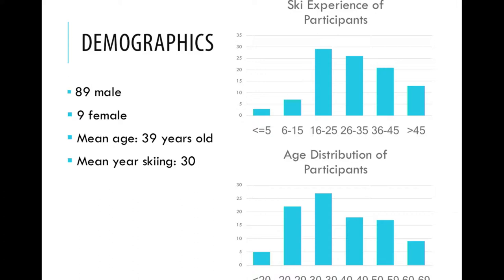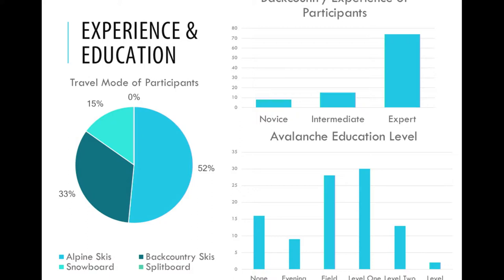Some demographics based on our survey: we have a more experienced and older population than we were anticipating, given MSU's big college influence on the town. Our mean age is 39 years old, and the mean number of years skiing for participants is 30. So people have been skiing for a long time and are generally older than we thought. We ended up with 89 guys and 9 females — we're trying to work on that for next year. It's all volunteer-based, so it's hard to know exactly what the size of the population is.